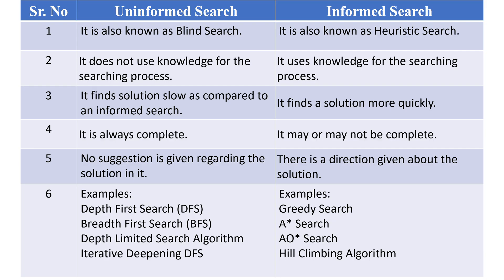Now for the main difference — a comparison table is given with uninformed search in the first column and informed search in the second. First difference: uninformed search is also known as blind search because it has no knowledge about the problem or goal, while informed search is also known as heuristic search. Second difference: uninformed search does not use knowledge for the searching process, while informed search does use knowledge for searching.